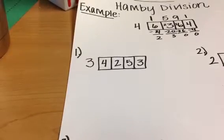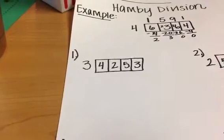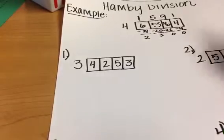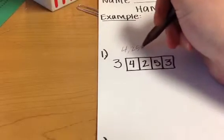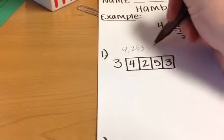This is a quick video to show you the handy division way that the kids are learning. It's basically a box method. So in this problem, the actual problem is 4,253 divided by 3.